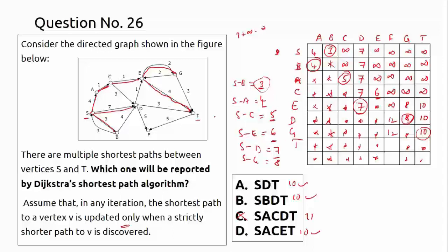Process G's neighbors. G to F: nothing, so F stays 12. G to T: G to T=3, so 8+3=11. Previous T=10, which is shorter — no update. Minimum is 10 for T, obtained via E. So the shortest path S to T is 10, found via path S-A-C-E-T. Options S-D-T and S-B-D-T were not reported. Option D (S-B-D-T) is the correct answer to what Dijkstra reports.